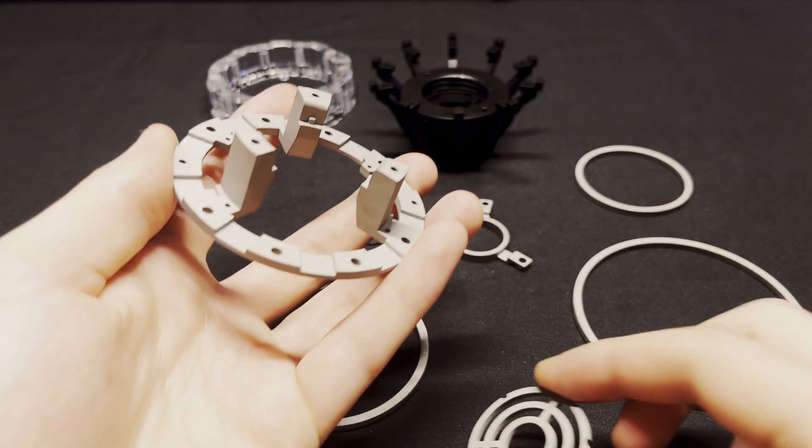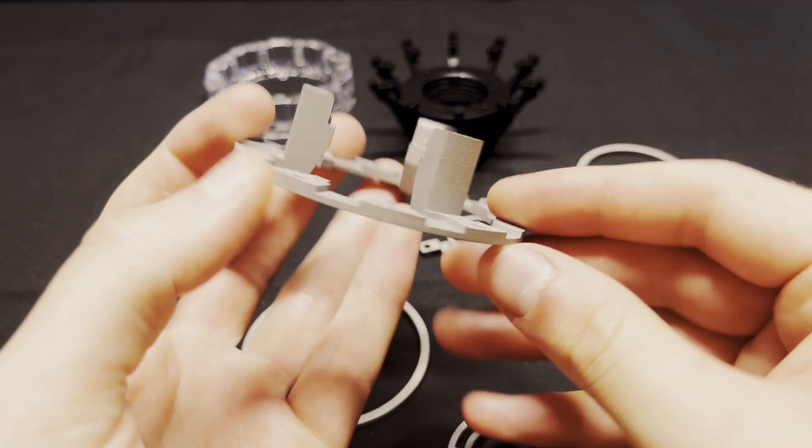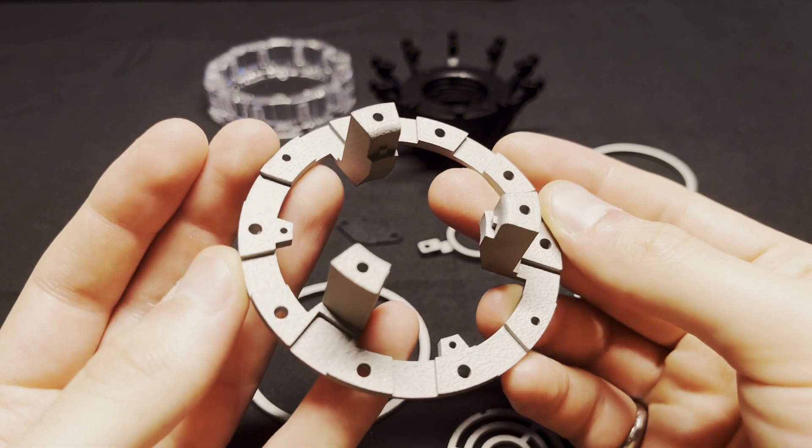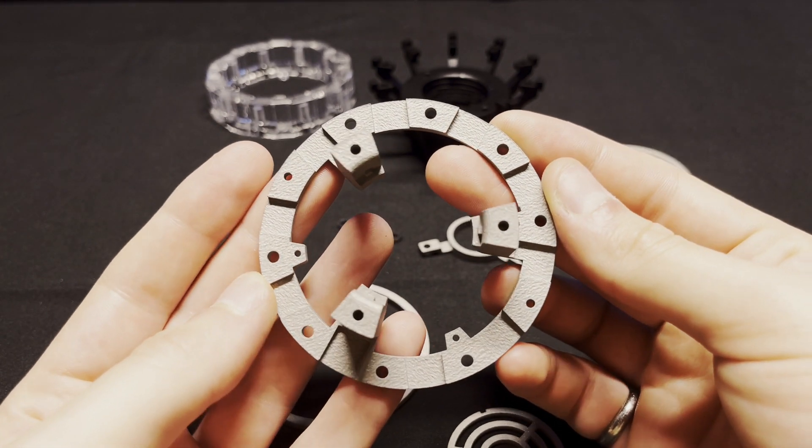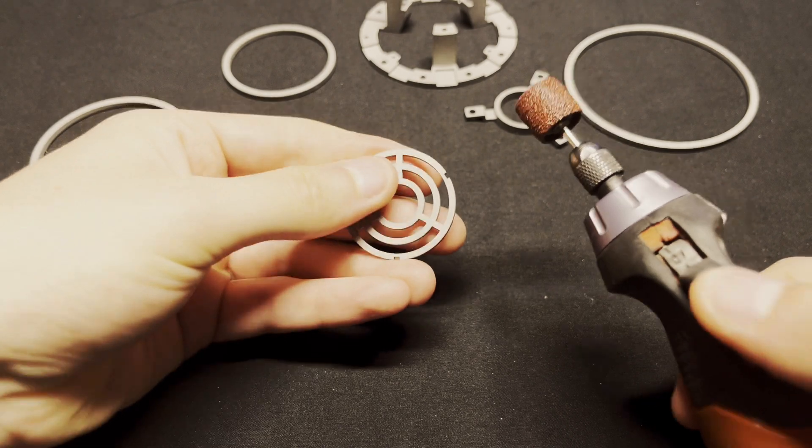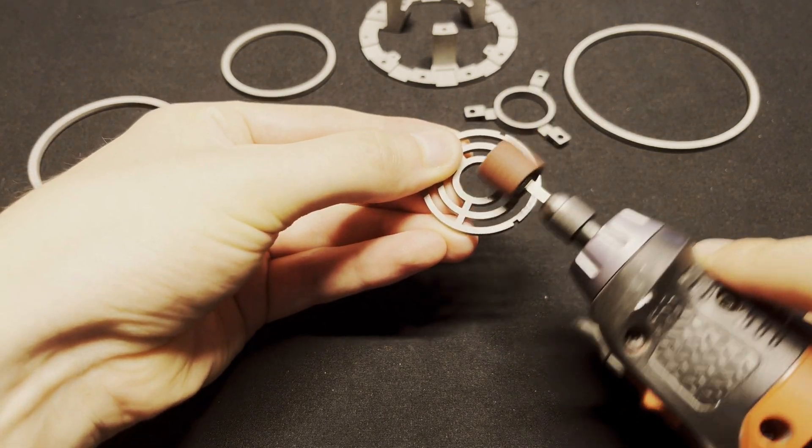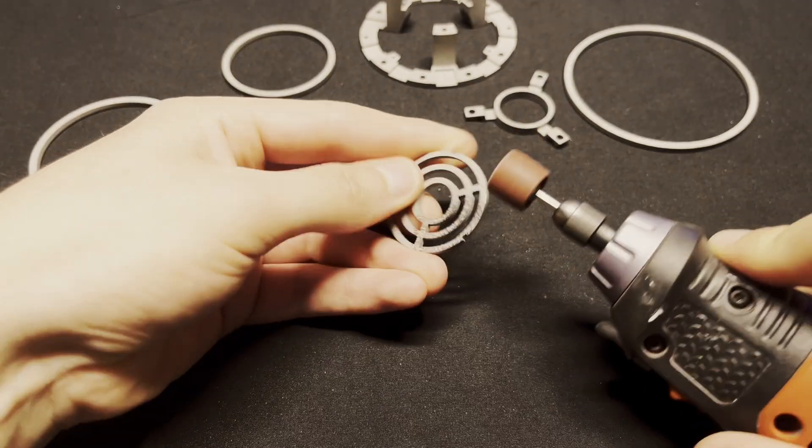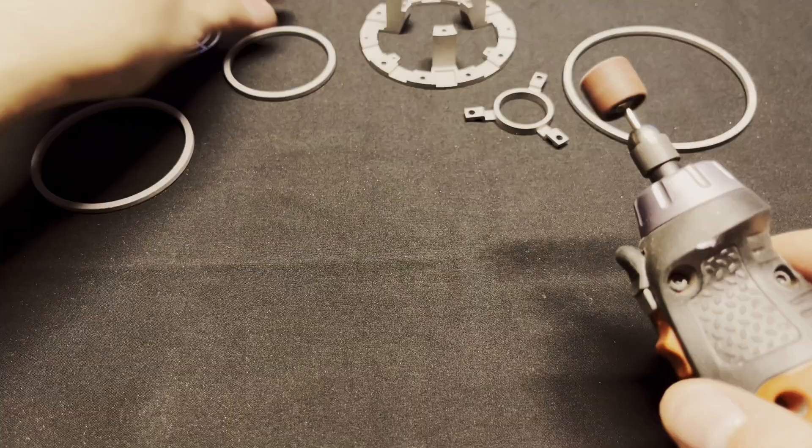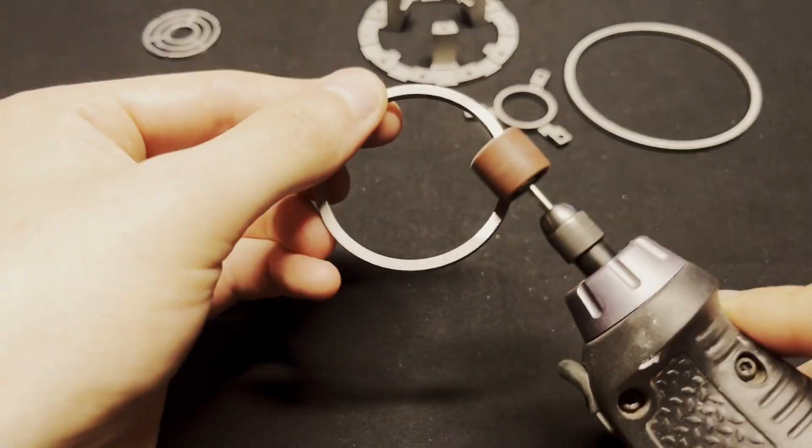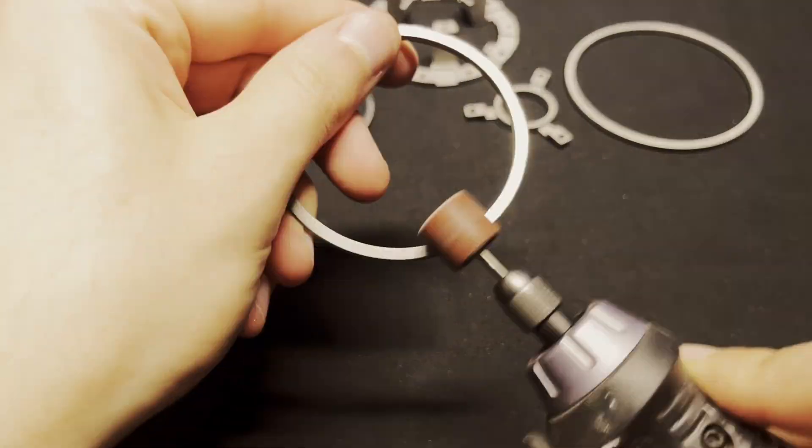I'm starting this build by sanding down all the stainless steel parts. They all have a rough surface finish so I want to sand all that away to get nice shiny pieces. I start by using an 80 grit sanding drum on my Dremel and work all the way up to 600 grit. This is definitely the most labor-intensive part of the build but if you don't really care about the final surface finish you can just skip this sanding and move right to the electronics.